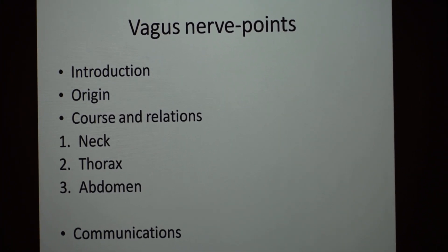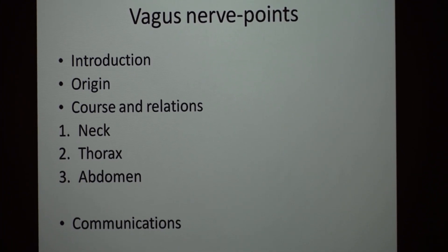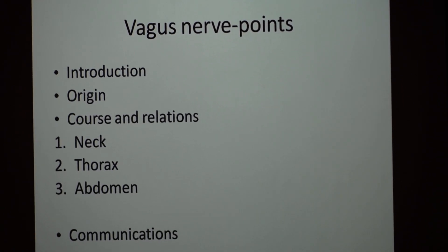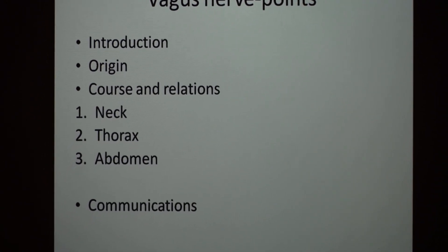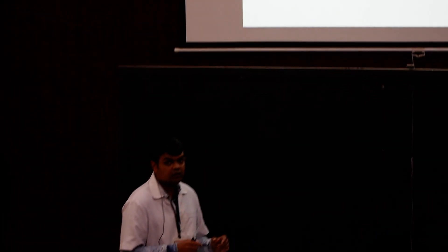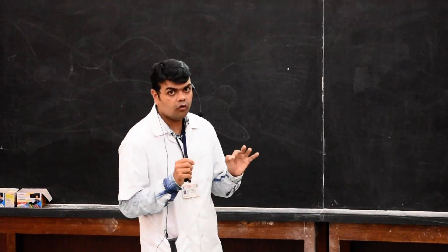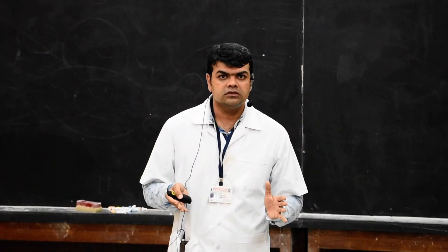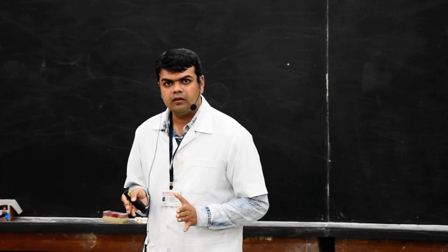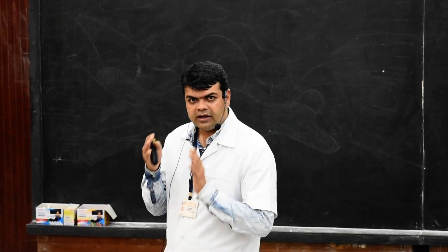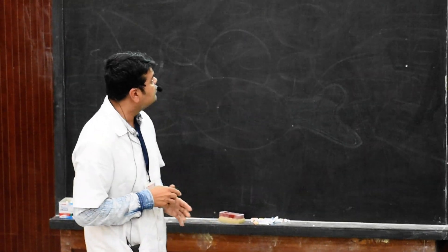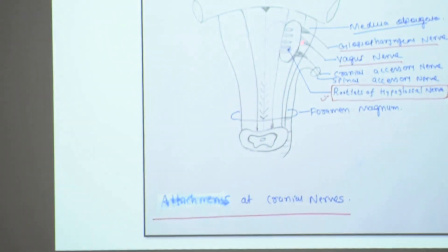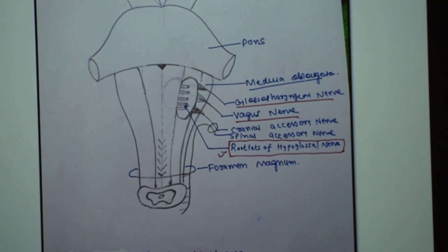Our next topic is the vagus nerve. We will discuss its introduction, origin, and relations. The vagus nerve is the longest cranial nerve, with extensive distribution throughout the body. It starts from the posterolateral sulcus of the medulla oblongata, just below the origin of the glossopharyngeal nerve.